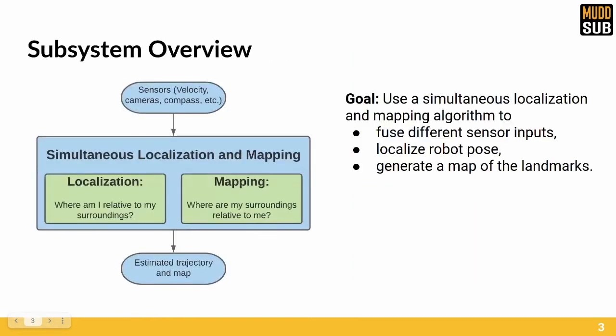SLAM stands for simultaneous localization and mapping, and is used to determine where the robot is relative to its unknown surroundings. Both our current pose and the map outputted by SLAM are used by later subsystems to directly move the robot and accomplish tasks.